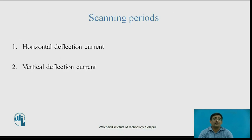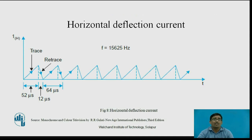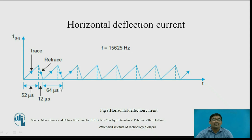Scanning periods — there are two types: horizontal deflection current and vertical deflection current. For the horizontal deflection current, the total time period equals trace plus retrace. The trace period is 52 microseconds and the retrace requires 12 microseconds, so the total time is 52 + 12 = 64 microseconds. The corresponding frequency is 15,625 Hz for the horizontal deflection current.